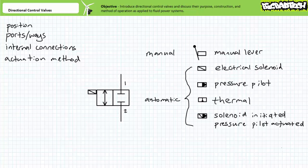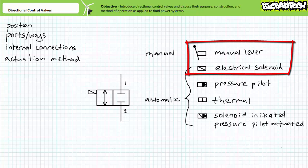It's helpful to divide these actuation methods into two general families: manual and automatic. Manual methods — like levers, pedals, and buttons — all require a human operator to physically move the valve into a new position. Automatic methods — like mechanical linkages, thermostats, pressure pilots, and electrical solenoids — don't necessarily require a human operator. Most of the content in this playlist uses manual levers and electrical solenoids; if you can remember just these two actuation methods, you'll do just fine.